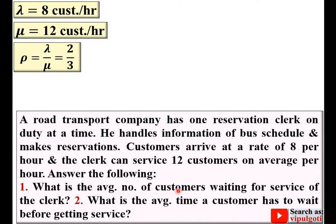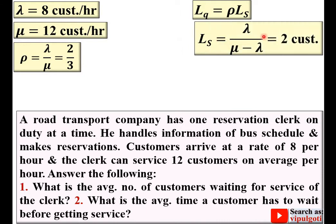The first question asks for the average number of customers waiting for service — that means waiting in a queue, denoted Lq. First I find Ls, the average number of customers in the system: Ls = lambda / (mu − lambda), which gives Ls = 2 customers. Then Lq = rho × Ls = (2/3) × 2 = 4/3 customers. That is the first answer.